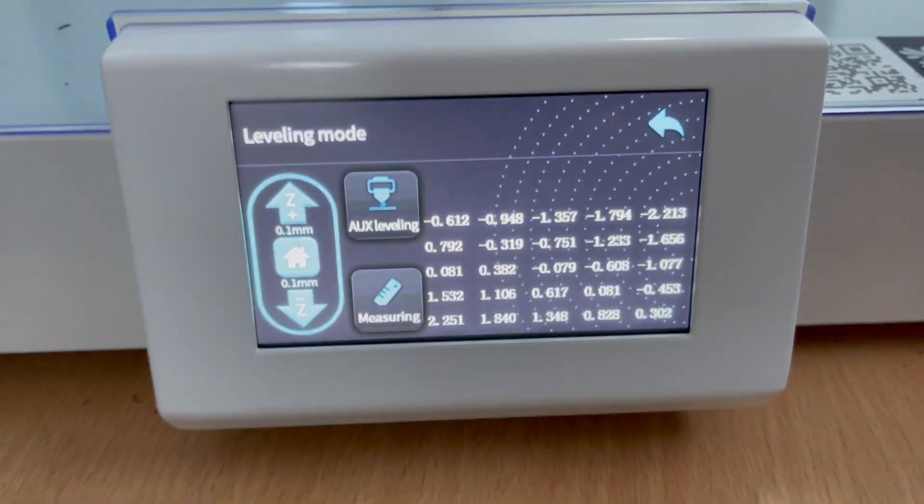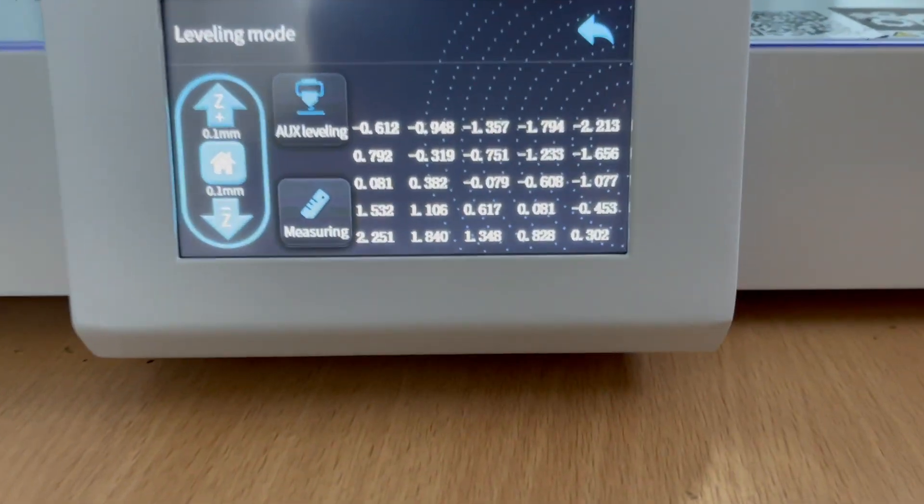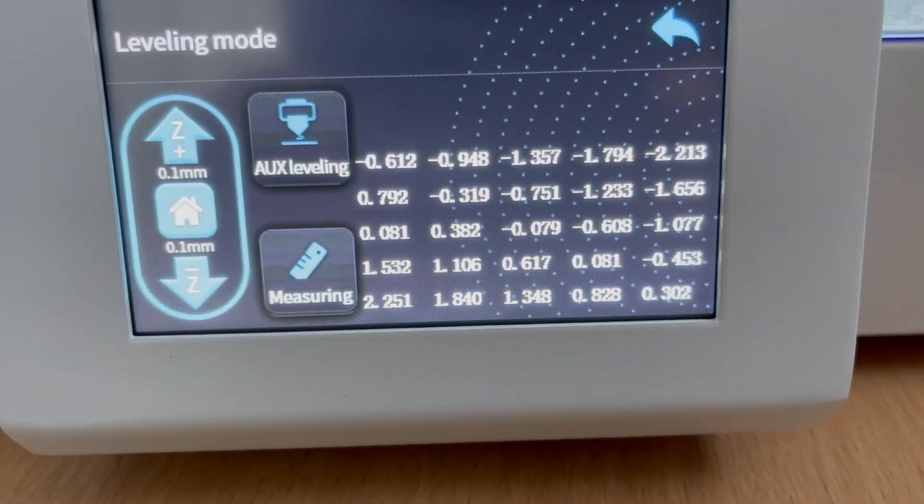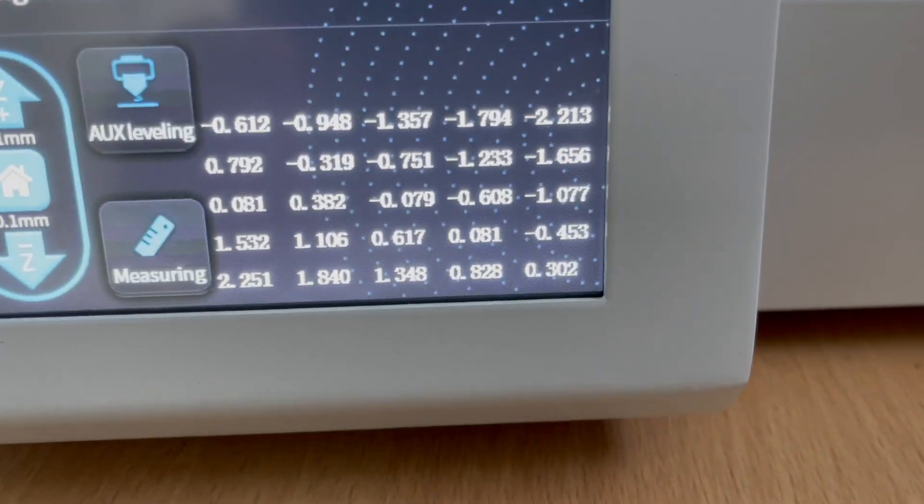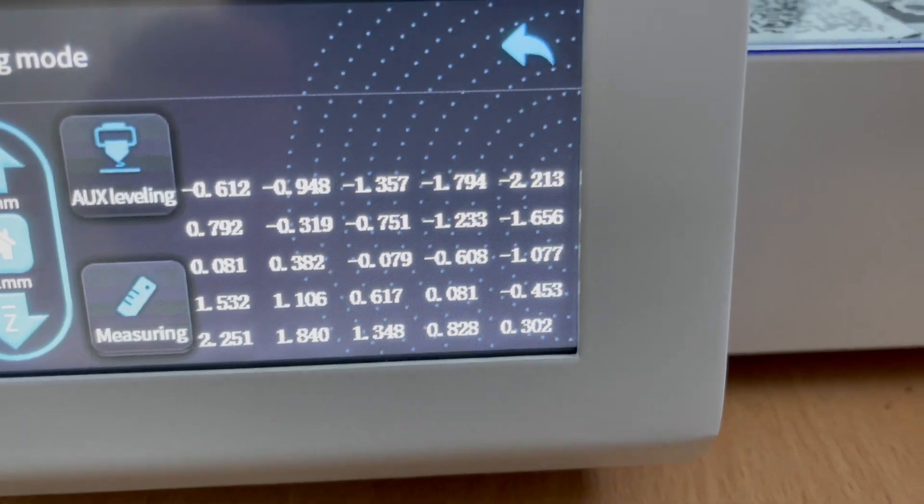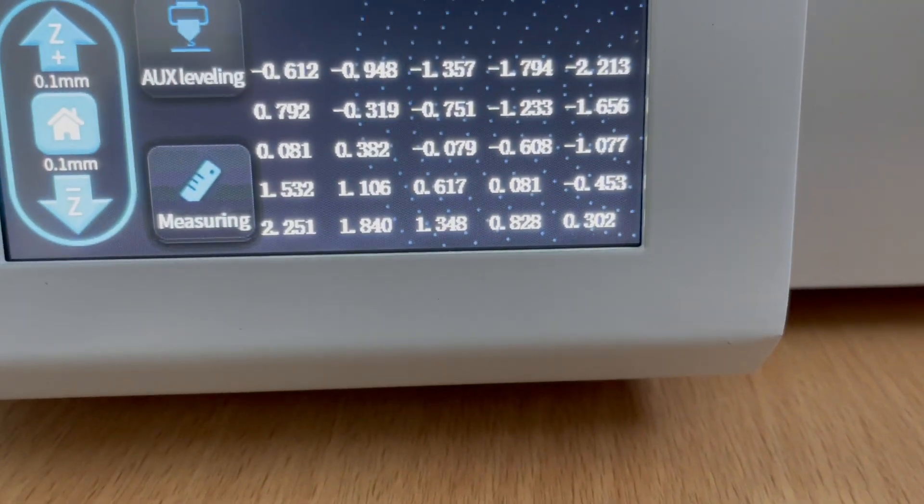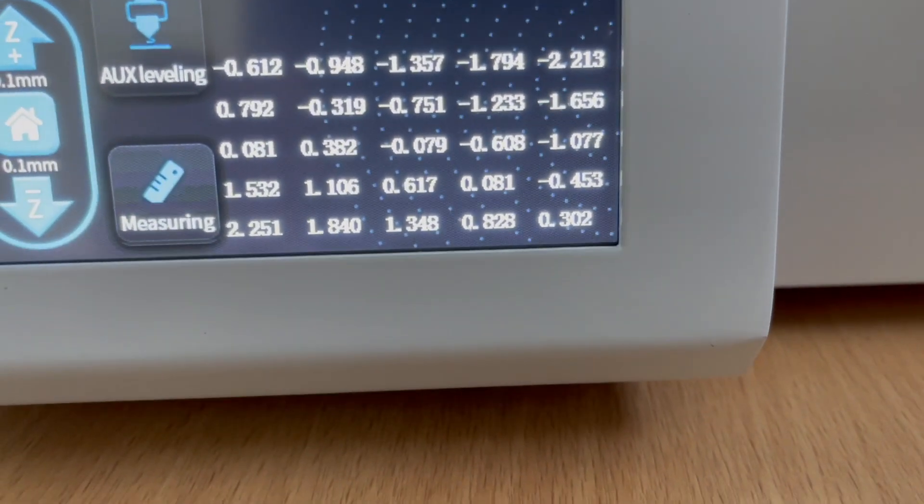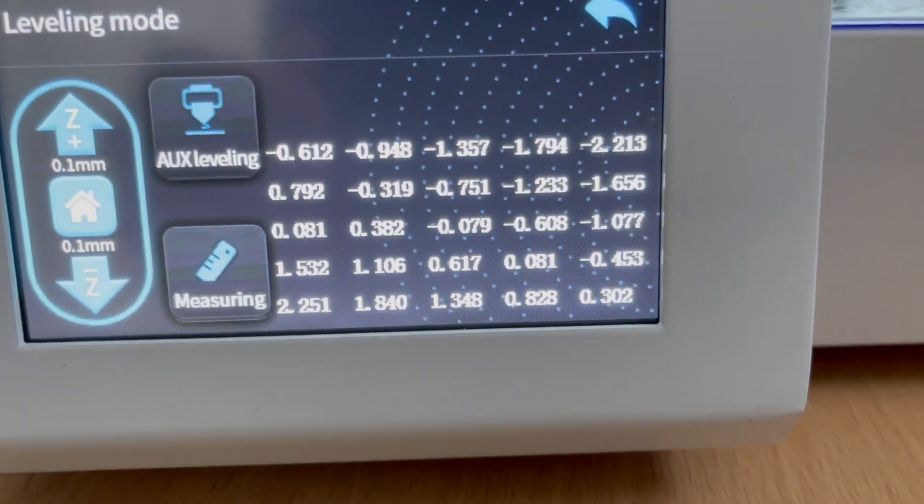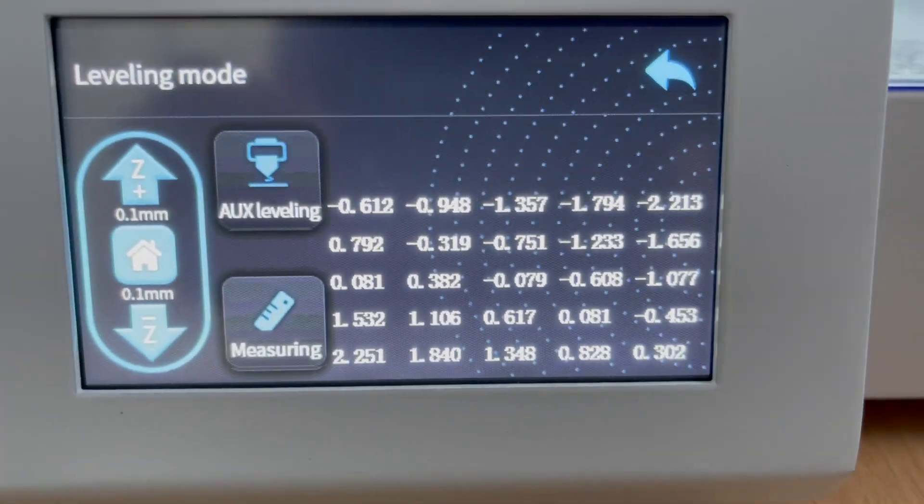So you can see the previous results are there and at the back they're all negative which means they're too low which is where the filament was just spewing out and not sticking, and at the front they're too high so that's where it's cutting into the bed. It is completely ignoring the data on the BL touch.